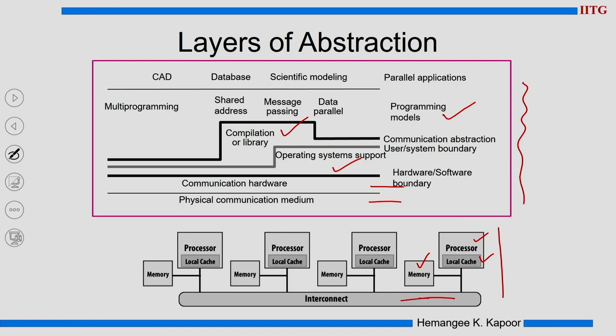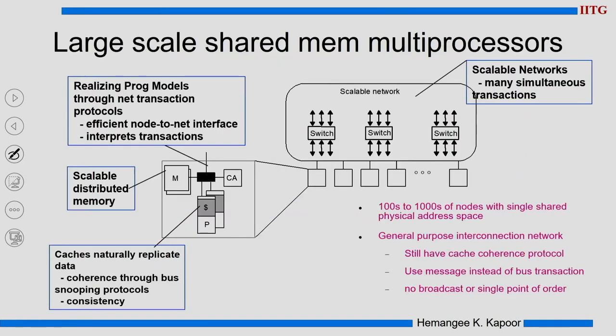This interconnect and these memories provide a global address space — it is not that only this processor can access this memory; it is actually available to all the modules. For example, if I have 100 addresses here, I will have 101 to 200 addresses here and so on. The addresses are distributed and globally you get 4 times the capacity of one particular module. That is the architecture we are thinking about.